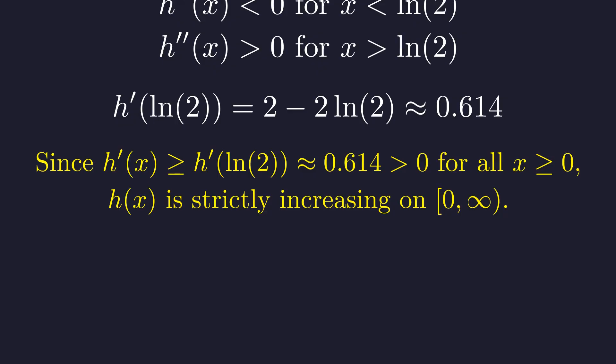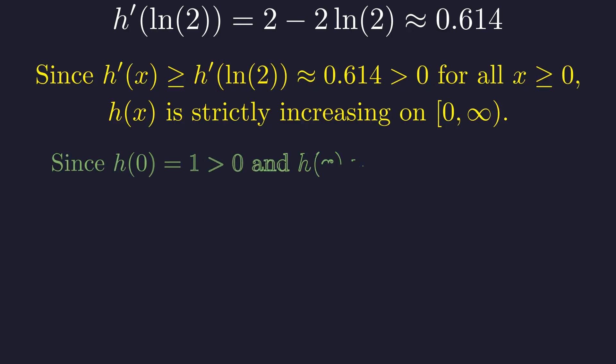So the minimum value of h prime on the non-negative reals is about 0.614, which is definitely positive. This means h is strictly increasing everywhere on this interval. Since the function starts at 1 and is strictly increasing, it stays above 1 for all positive x. Therefore, h of x is always positive when x is non-negative, proving no solutions exist on this side.